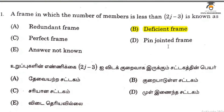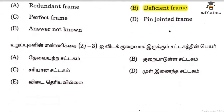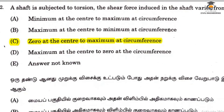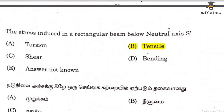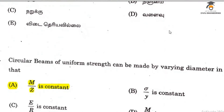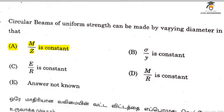A frame in which the number of members is less than 2J minus 3 is a deficient frame. A shaft subjected to torsion uses formula option C. Question 152 is option C. Question 153 relates to tensile stress below the neutral axis. Question 154: M by Z is constant.